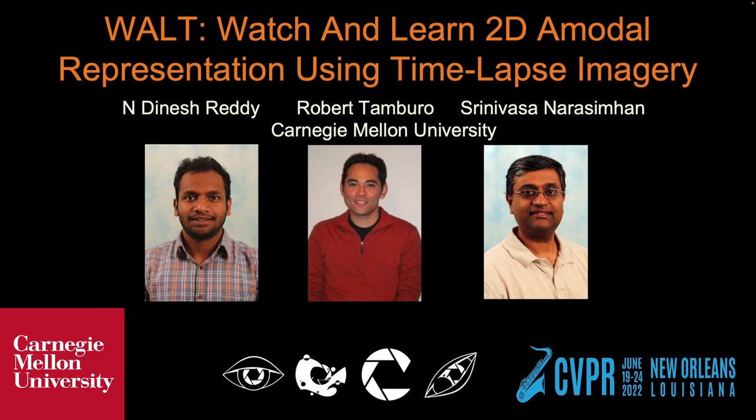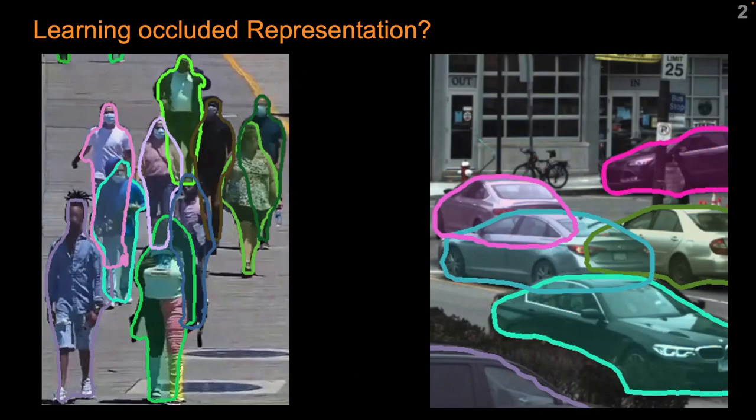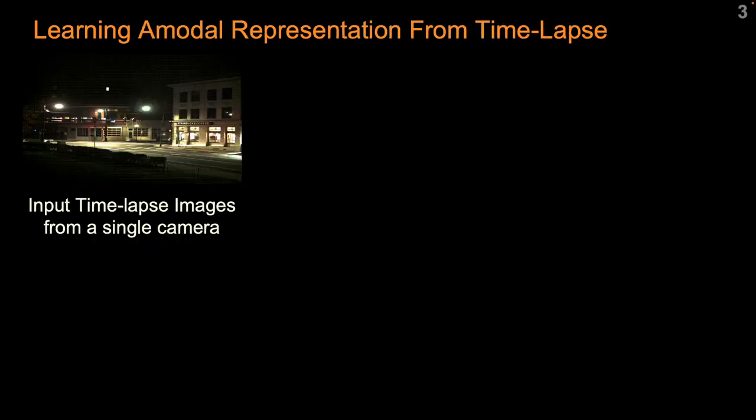Hello, I am going to present our work on Vault: Watch and Learn 2D A-Model Representation Using Time-lapse Imagery. The goal of the paper is to learn A-Model Representation — that is, detecting and segmenting both the visible and occluded regions of an object.